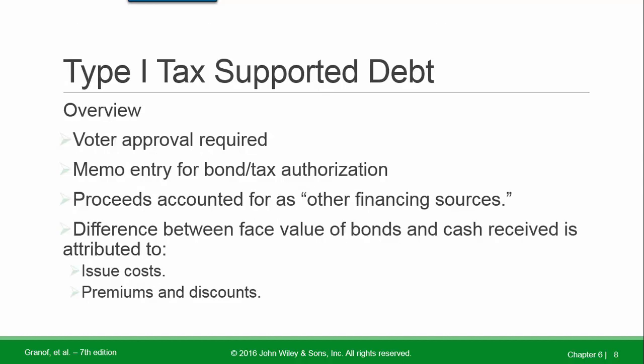Tax-supported debt requires voter approval. A memo entry is made for bond or tax authorization. Proceeds are accounted for as other financing sources. The difference between the face value of bonds and the cash received is attributed to issue costs, premiums, and discounts.